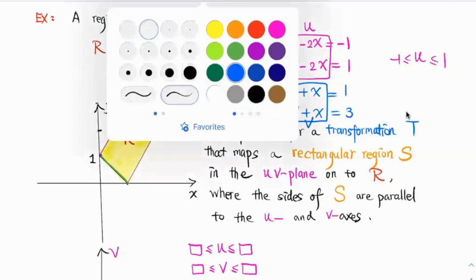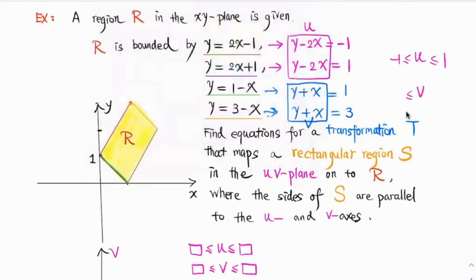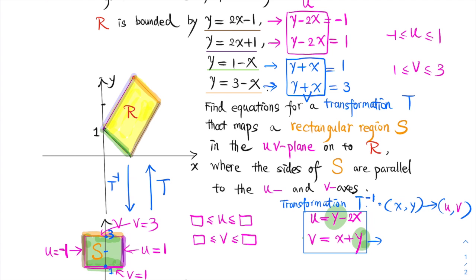Since boundary curves are mapped to boundary curves under a transformation, these two equations here define a transformation that maps R into S